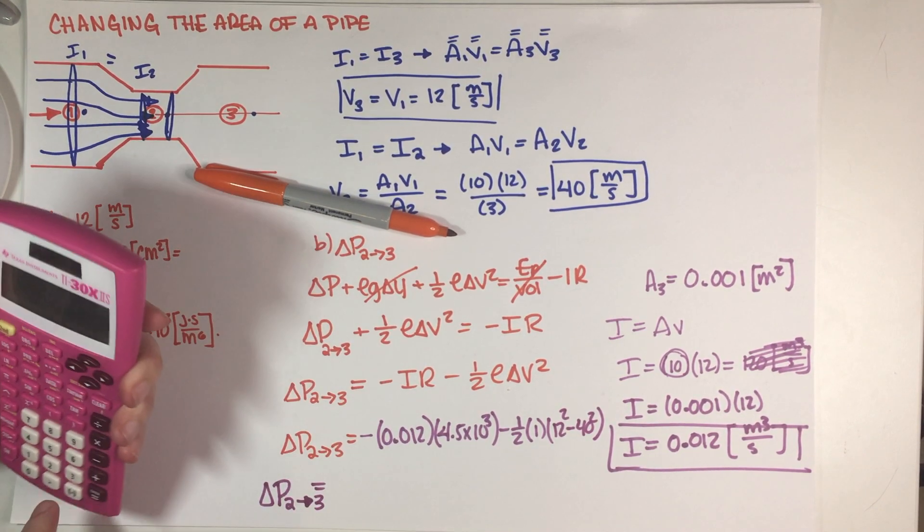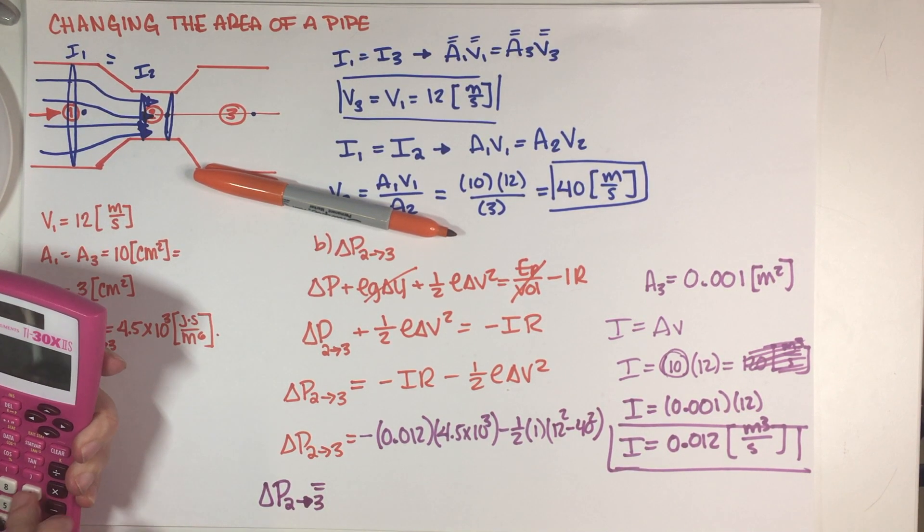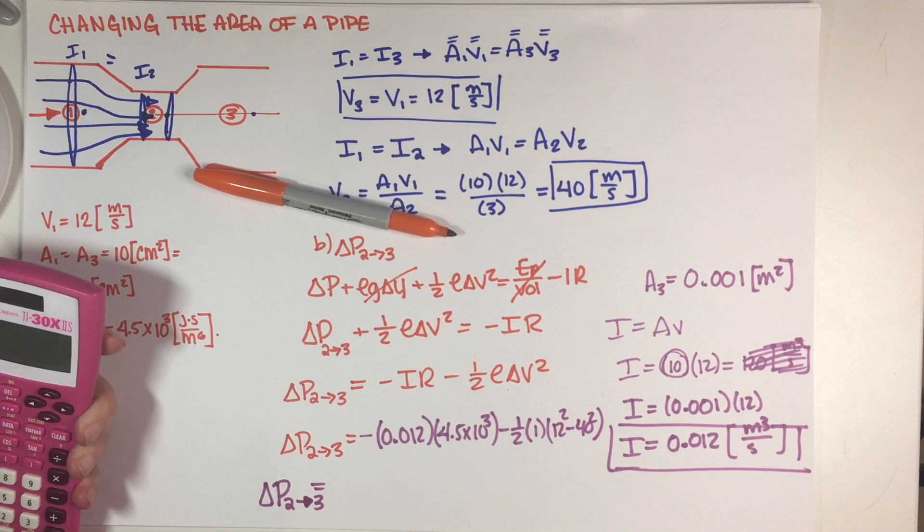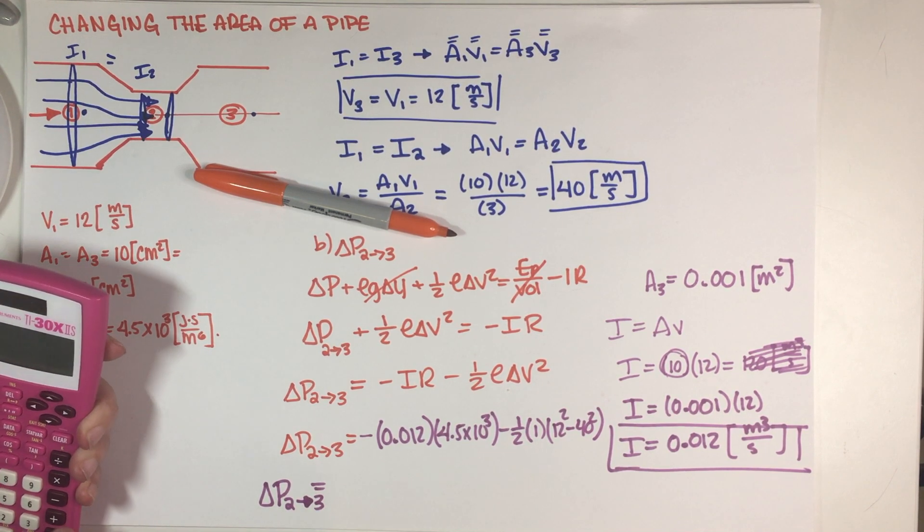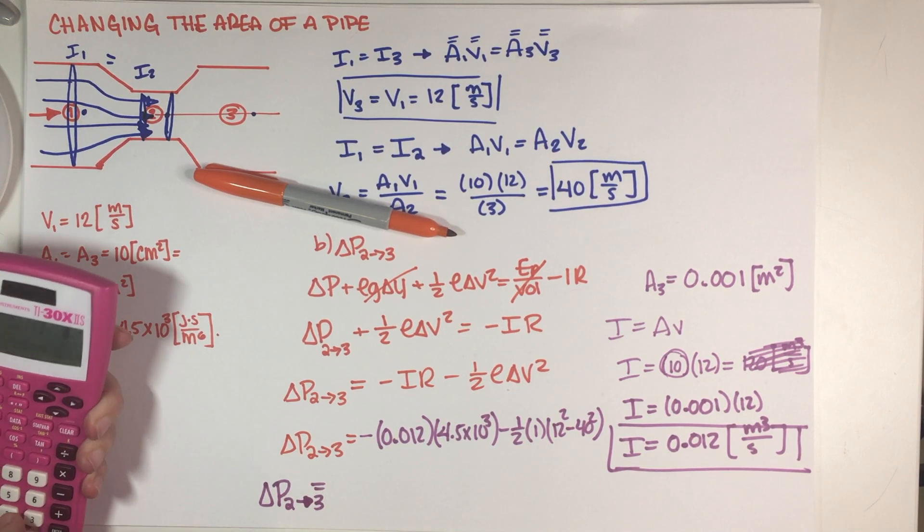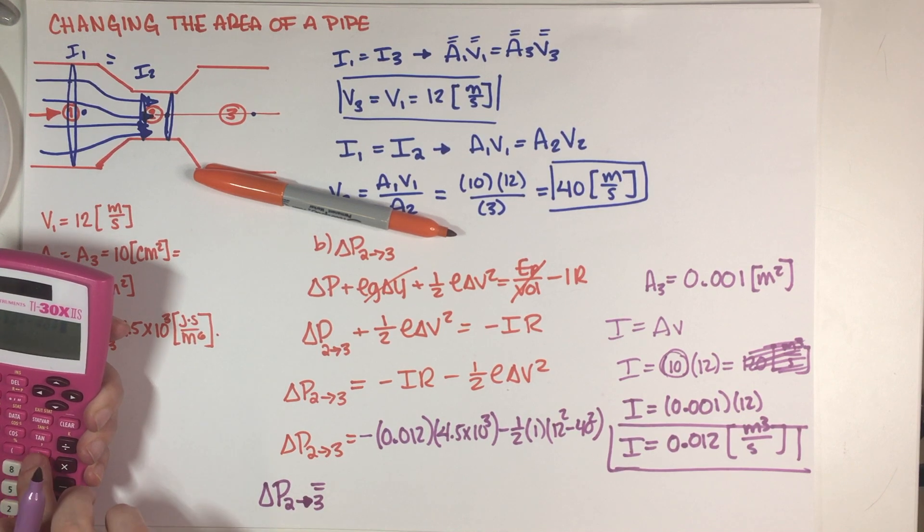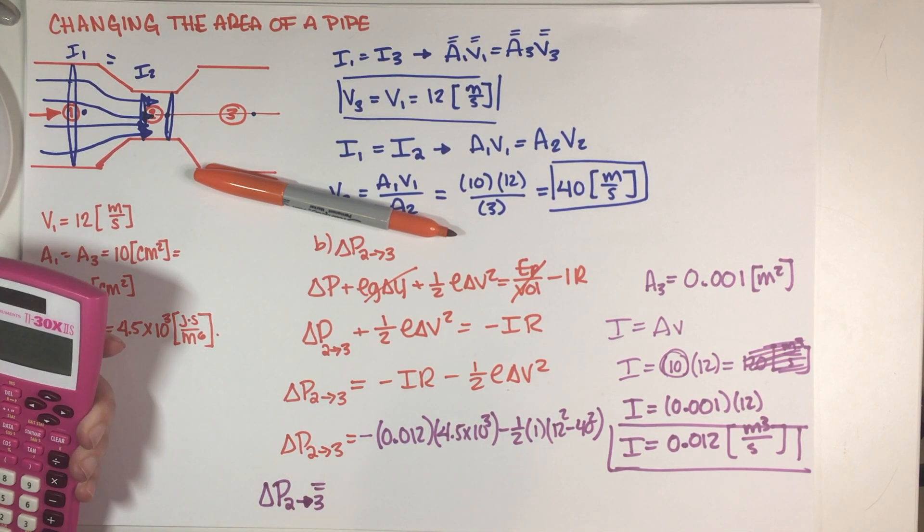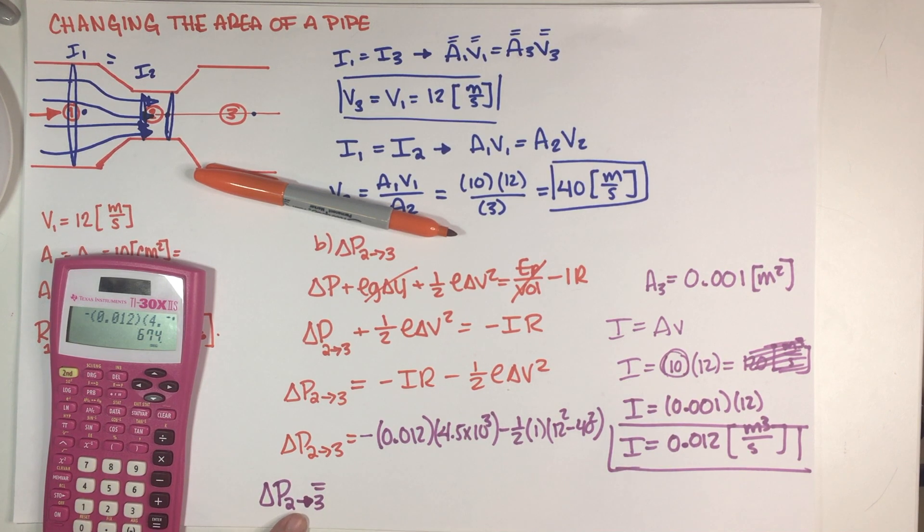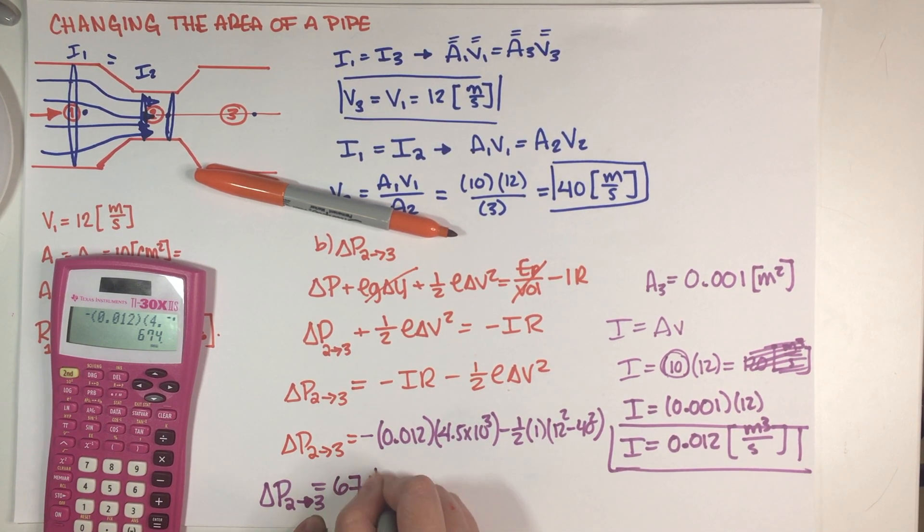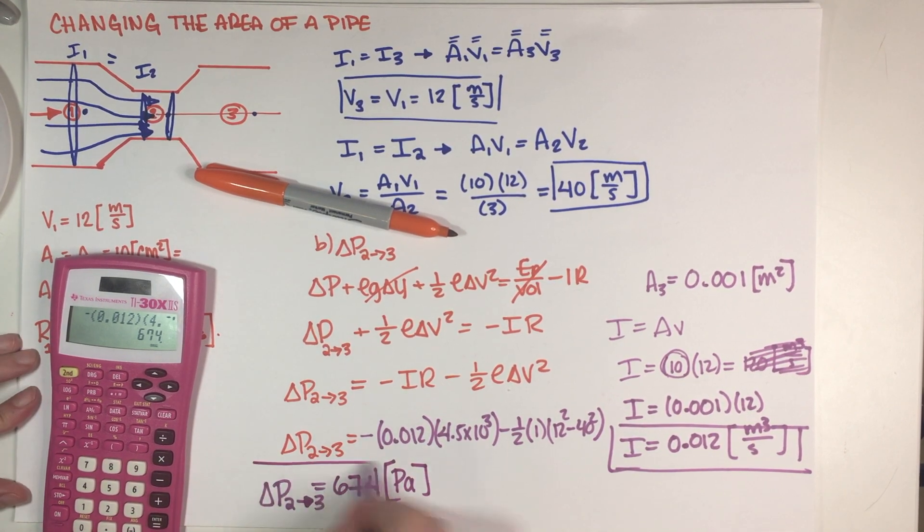So let's see. So this is negative 0.012 times 4.5 times 10 to the 3, minus 1 half, times 1, times 12 squared minus 40 squared, and 674. 674, so let's see, 674 pascals like this final answer.